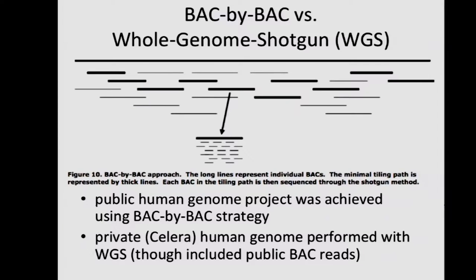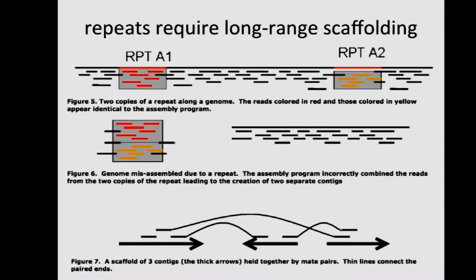The original public human genome project used the BAC-by-BAC strategy. The Celera human genome used a global whole genome shotgun, but they also included the BAC reads and constrained reads from one BAC to only assemble with each other — so it was really a hybrid project. Later in the talk we'll look at the panda genome, which was truly a completely whole genome shotgun de novo assembly.